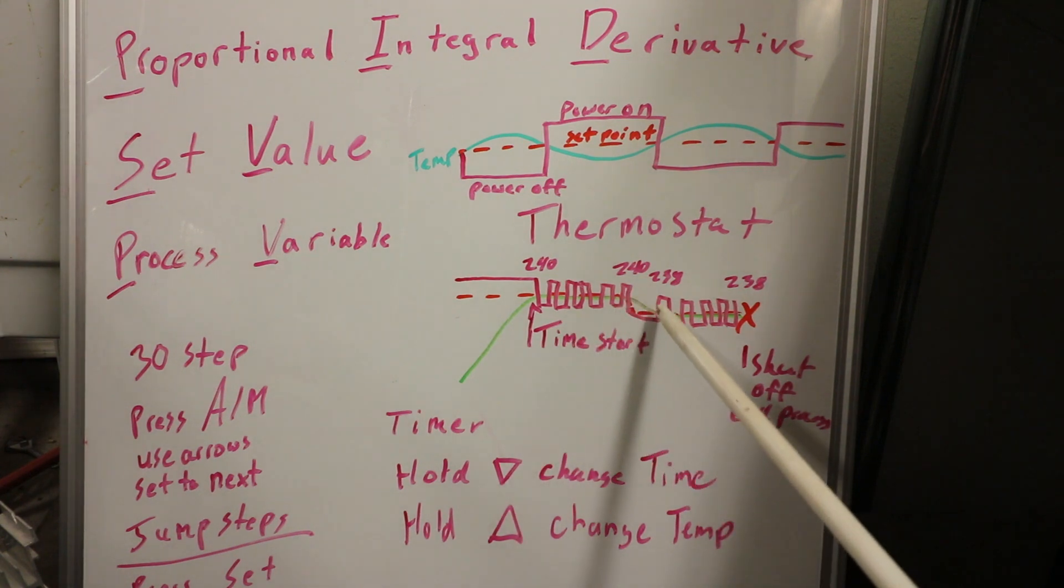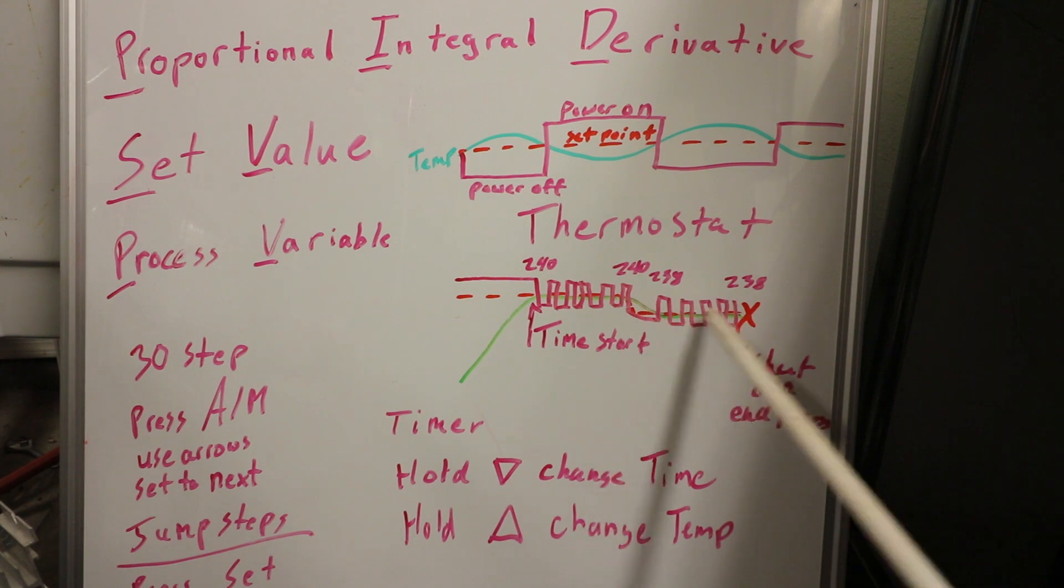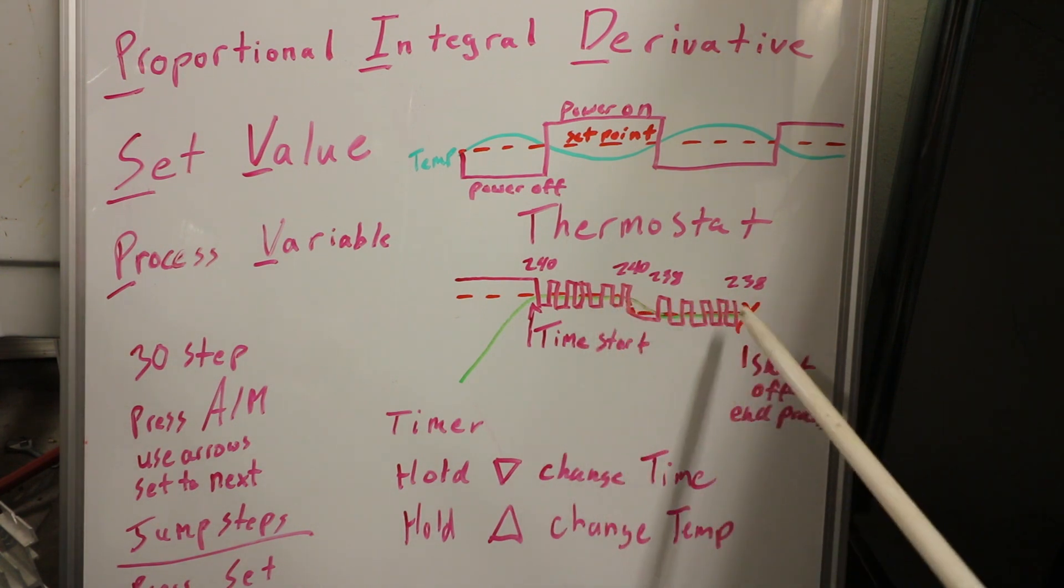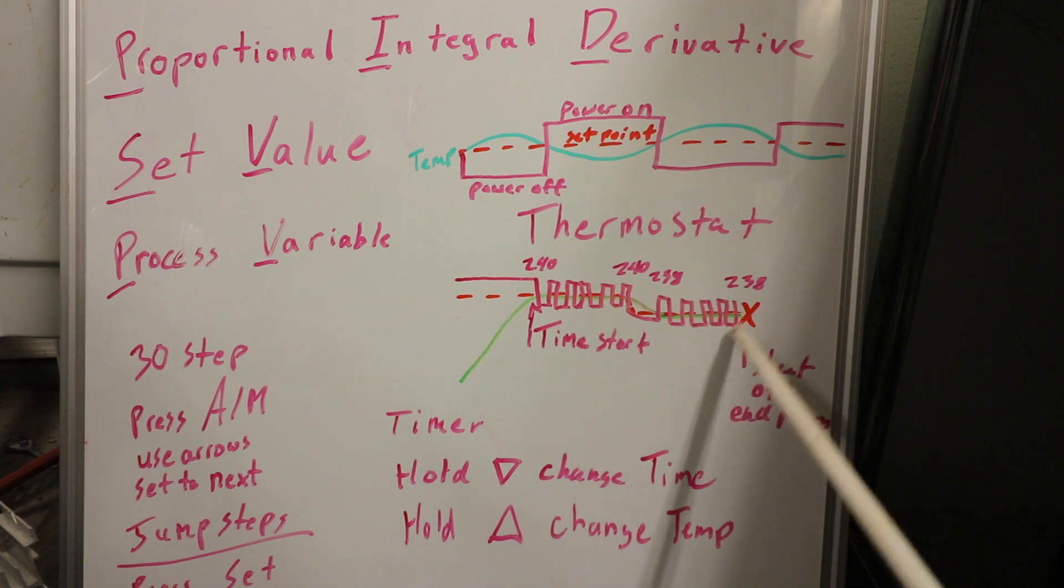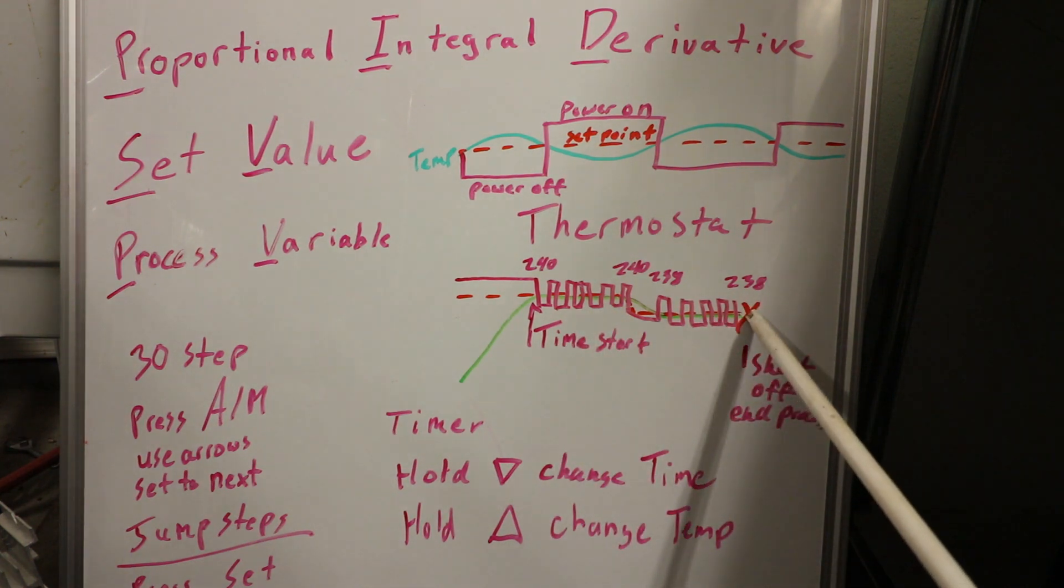And then I lower the temperature for 100 and something minutes, and that's the actual cook time. So that's what this is showing. And at the end, it'll end the process and shut everything off.